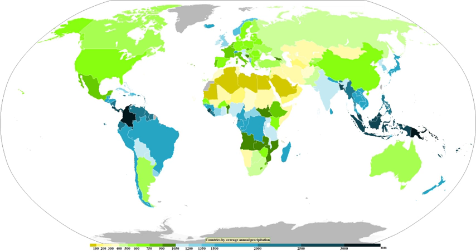Guinness World Records lists the world's largest snowflakes as those of January 1887 at Fort Keogh, Montana, allegedly one measured 38 cm wide. Although the ice is clear, scattering of light by the crystal facets and hollows means that the crystals often appear white in color due to diffuse reflection of the whole spectrum of light by the small ice particles. The shape of the snowflake is determined broadly by the temperature and humidity at which it is formed. Rarely, at a temperature of around −2 degrees Celsius, snowflakes can form in threefold symmetry—triangular snowflakes.